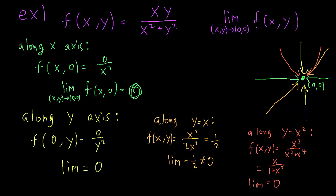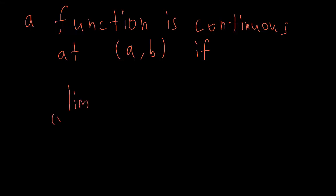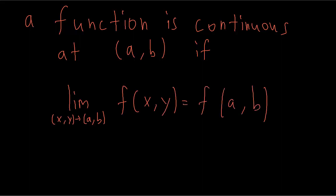You just keep trying different paths until you find one that's different. If you want to prove that a limit does exist, then you have to use the formal definition of a limit. But some functions allow us to evaluate limits easily if they are continuous. The definition of continuity is very similar to that of a single variable function — a function from R squared to R1 is continuous at a point (a, b) in the domain if the limit as x, y approaches (a, b) of the function is equal to the value of the function at (a, b). Some types of functions are always continuous wherever they are not undefined — these include polynomials, trigonometric functions, logarithms, and exponential functions.